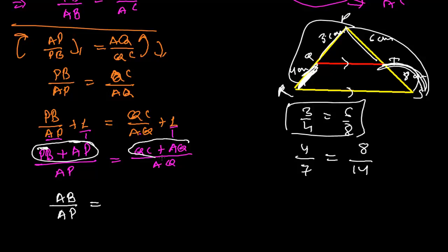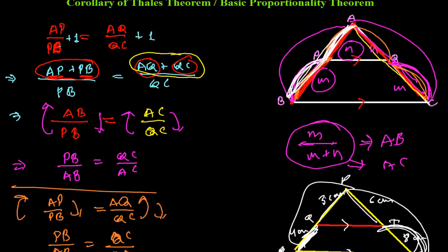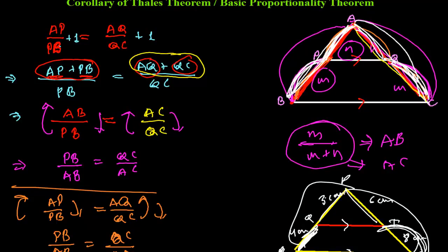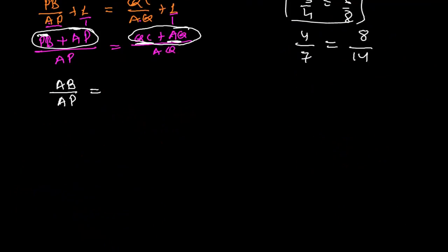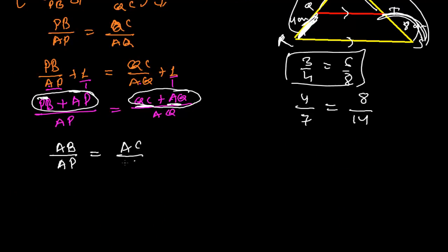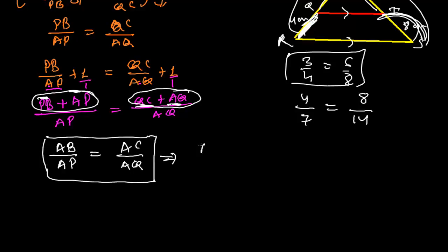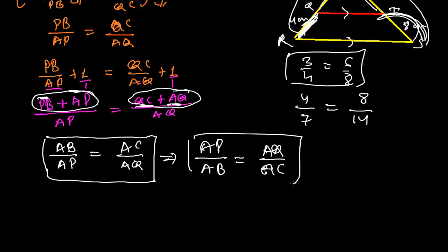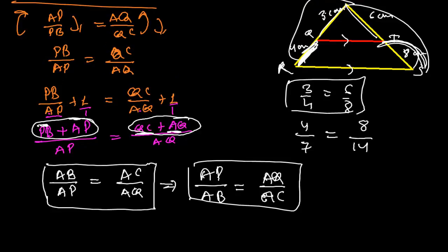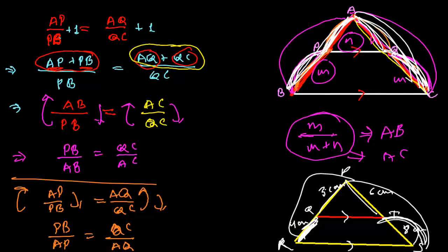And QC + AQ represents the whole side AC, so the right side becomes AC/AQ. So we get AB/AP = AC/AQ. This can also be written as AP/AB = AQ/AC — one more result from the same corollary of the Basic Proportionality Theorem.